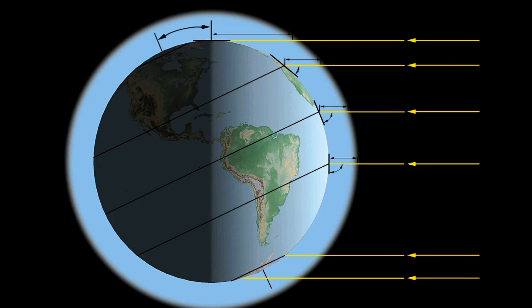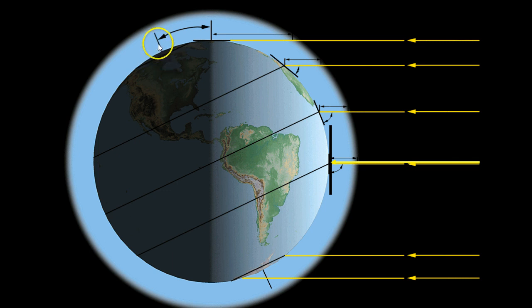This picture actually shows the opposite — it shows the northern hemisphere being tilted away from the sun. I know that because I can see the North Pole is in the shadow and tilted away.